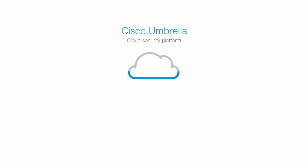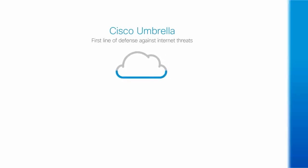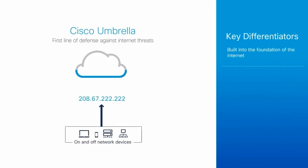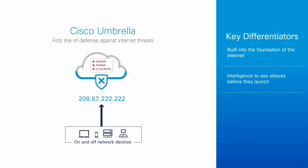And that's where Umbrella comes in. Cisco Umbrella is a cloud security platform that provides the first line of defense against threats on the internet wherever users go. By analyzing and learning from internet activity patterns, Umbrella automatically uncovers attacker infrastructure staged for current and emerging threats, and it proactively blocks malicious requests before they reach a customer's network or endpoints. With Cisco Umbrella, customers can stop phishing and malware infections earlier, identify already infected devices faster, and prevent data exfiltration.